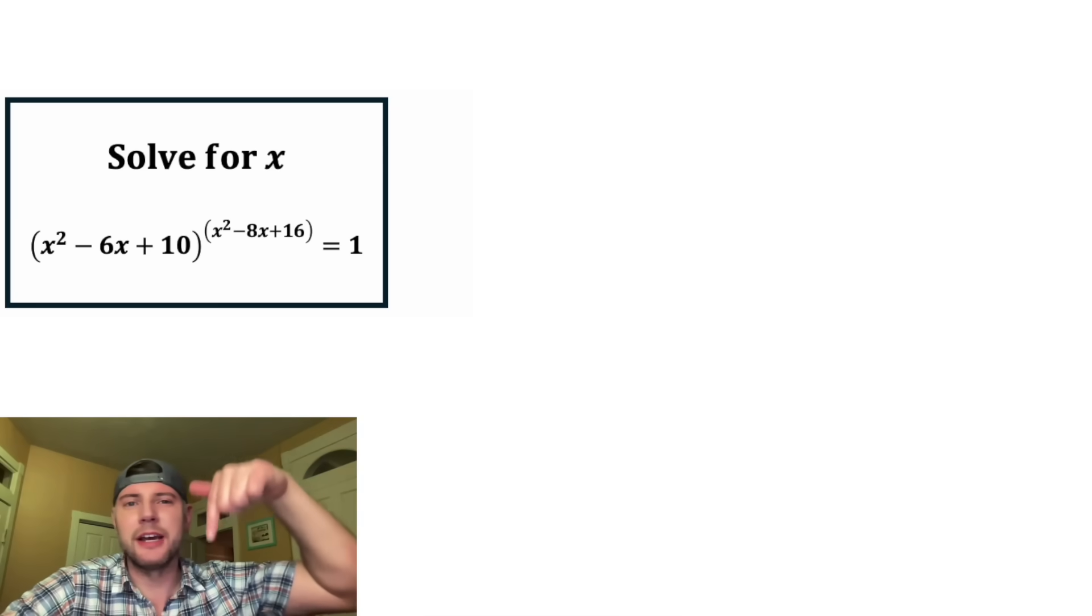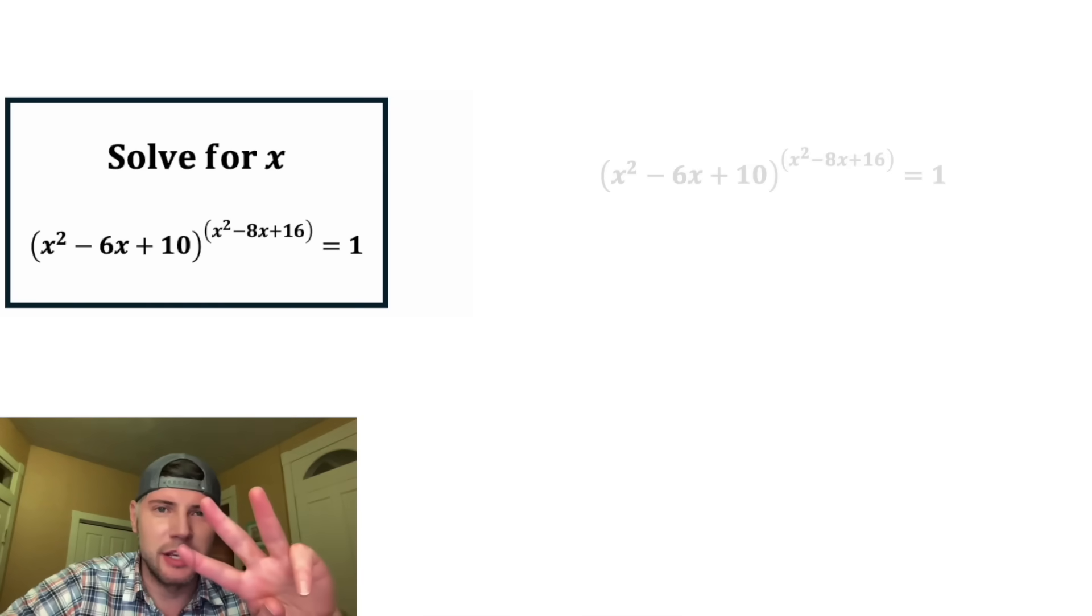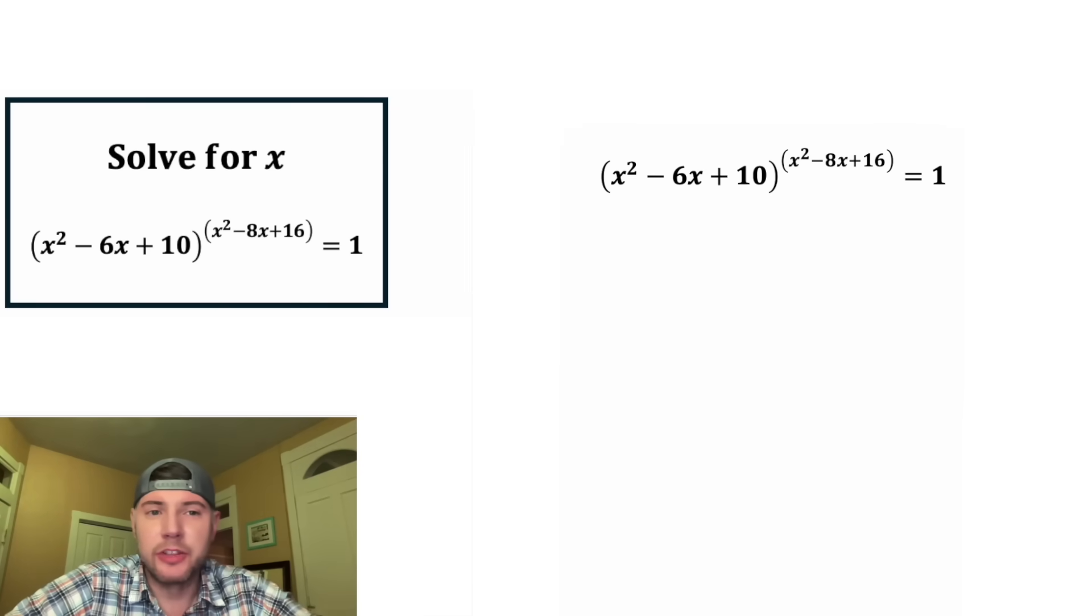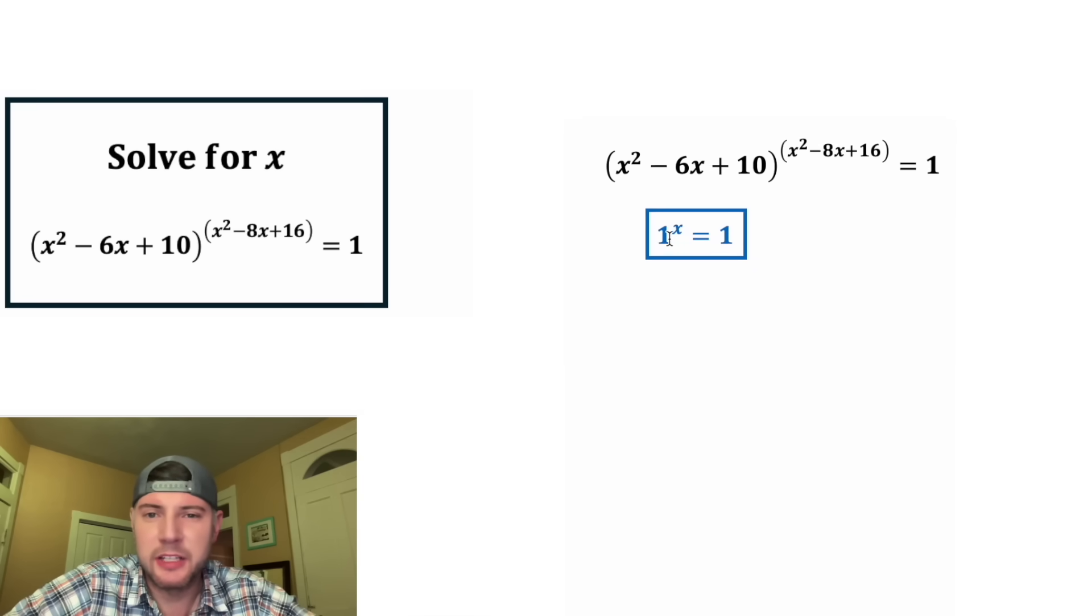And if you want to try this one, pause it right now because I'm going to solve it in 3, 2, 1. So there are three scenarios where we can do something to a power to get 1. For the first case, if we have a base of 1, our exponent isn't going to matter. We're still going to have 1.